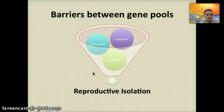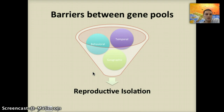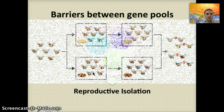All of these — whether temporal, behavioral, geographic, or hybrid — lead to something called reproductive isolation. If there's behavioral, temporal, or geographic isolation, it interferes with the ability of those groups to reproduce. They are reproductively isolated from one another.